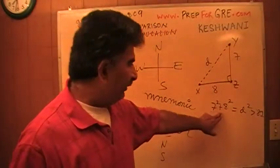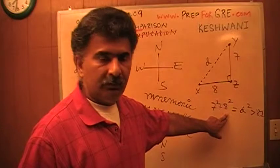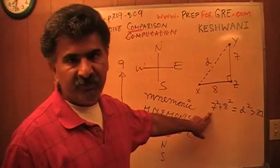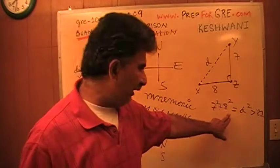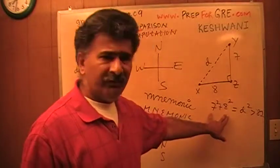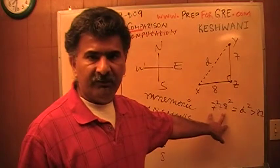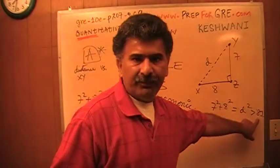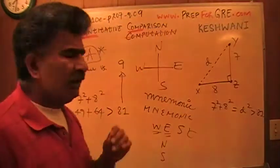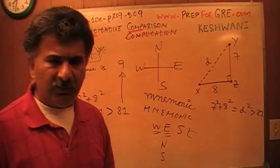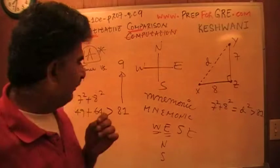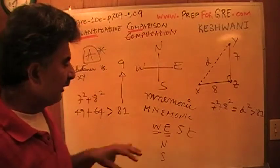That's it. I only have to compare it against 9. I'm not interested in what it is. All I'm interested in is how does it compare with 9. This quantity D squared has to be more than 81. Because 50 plus 64, I made 49 into 50, and 64 into 60, 50 plus 60 is 110, that's more than 81. This quantity is bigger. The quantity in column A is bigger. End of the story.